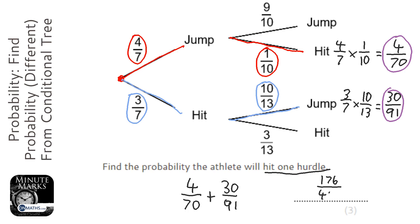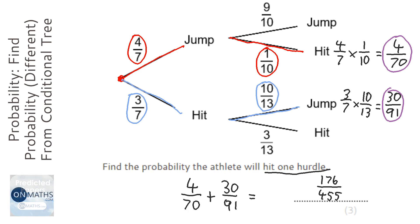That's going to be 176 over 455 — let the calculator do the hard work there. Now if it's a non-calculator question, generally speaking the denominators of the fractions are a little bit simpler, and they tend to do those on the independent ones because they can manipulate the denominators a little bit more.